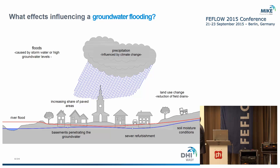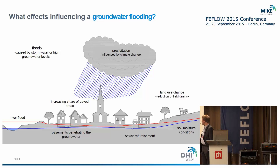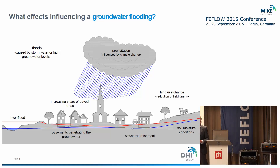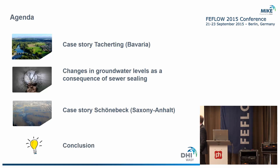Groundwater flooding can have many reasons. If we have a settlement close to a river, the river flood can increase groundwater levels. We can also have precipitation storm events, and other effects like land use changes, refurbishments, new buildings with deep basements, and more sealing of surfaces. Our question was how these different changes affect our groundwater system, and for that I would like to introduce three different case studies with different topics: one small village in Bavaria, changes between groundwater levels and sewer sealings, and a case study of a town in Saxony-Anhalt called Schönebeck.